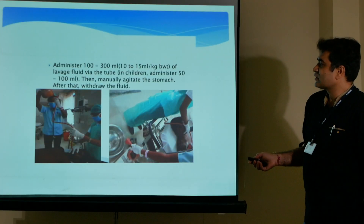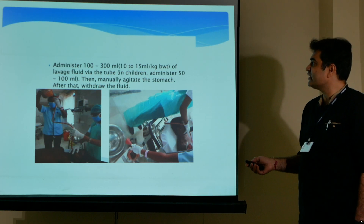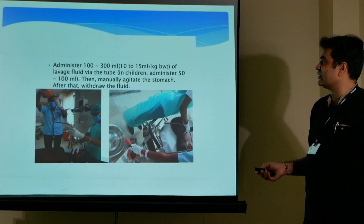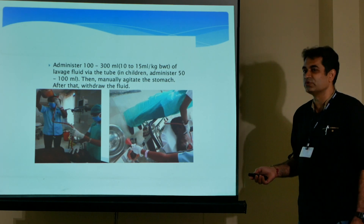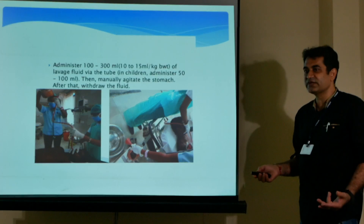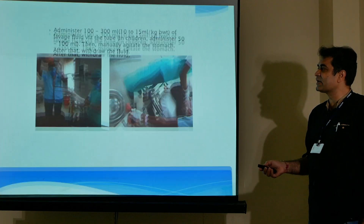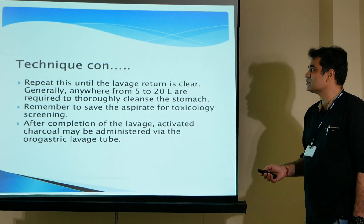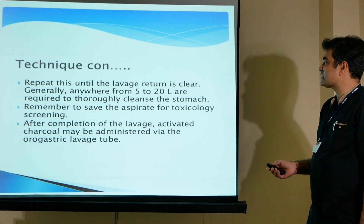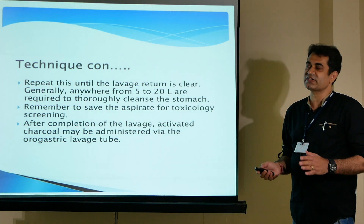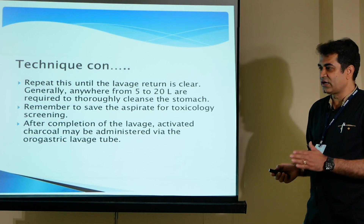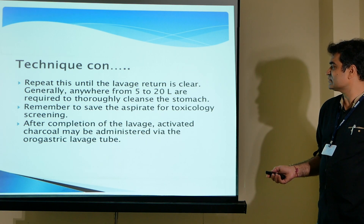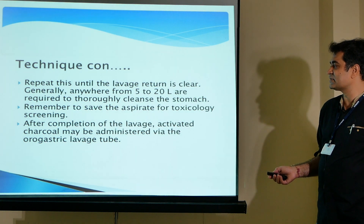After confirming tube position, administer 100 to 300 ml — or 10 to 15 ml per kg body weight — of lavage fluid through the tube; in children administer 50 to 100 ml. Manually agitate the stomach, then withdraw the fluid. Repeat until the lavage return is clear; generally 5 to 20 liters are required. Remember to save the aspirate for toxicology screening and send it to the forensic lab. After completion, activated charcoal may be administered via the orogastric tube to prevent further absorption.